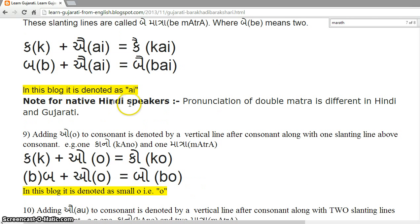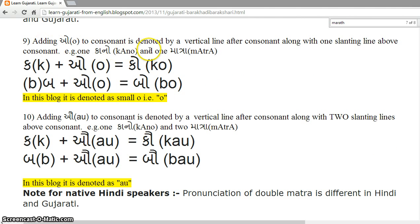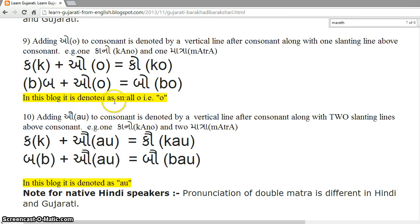A note for native Hindi speakers: the pronunciation of double Matrao is different in Hindi and Gujarati. In Hindi it is pronounced Ka, Ba, whereas in Gujarati it is Kai, Bai. Adding 'o' to a consonant is denoted by a vertical line after the consonant along with one slanting line above — that is one Kano and one Matra. K plus o = Ko. B plus o = Bo. In this block, it is denoted as small 'o'.